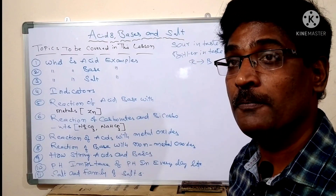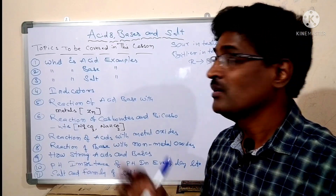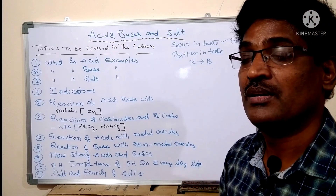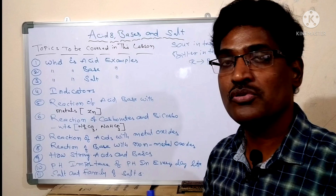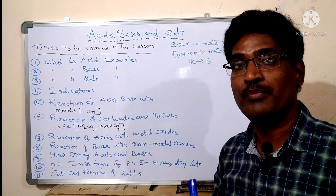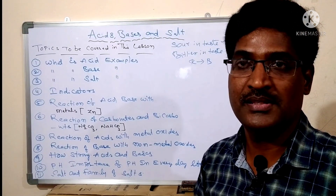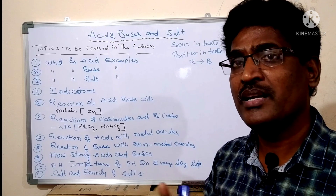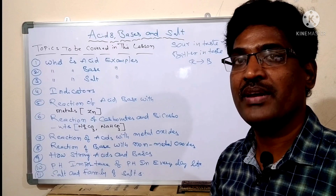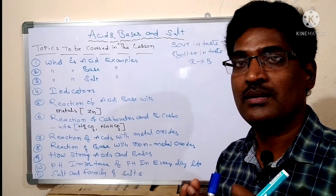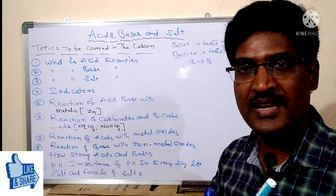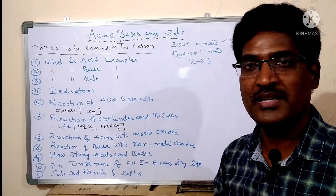What is indicator? Indicator means — we tasted the lemon, but we cannot taste all substances. How to know whether a substance is acid or base? To know this, we have indicators. There are three types of indicators: natural indicator, synthetic indicators, and olfactory indicators. Natural indicators include red cabbage, turmeric, blue litmus, and red litmus. These are examples of natural indicators.